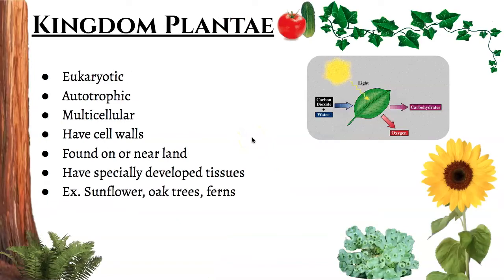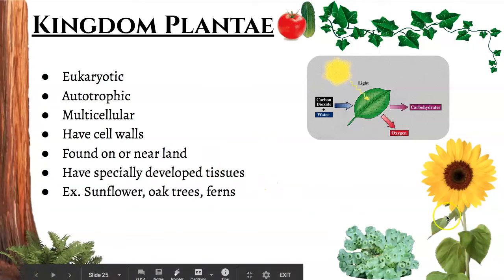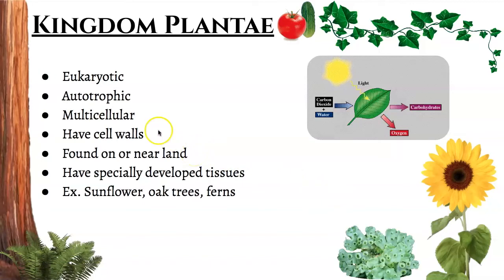Now we have Kingdom Plantae — this should be extremely familiar. This is our autotrophic kingdom: they perform photosynthesis and get their energy from the sun. They're found mainly on land and have specialized tissues — a leaf is an organ, a flower is an organ, a stem is an organ. They have cell walls and are only multicellular; there are no true unicellular plants. From time to time you may hear algae called a unicellular plant, but algae is actually a protist, not a plant.